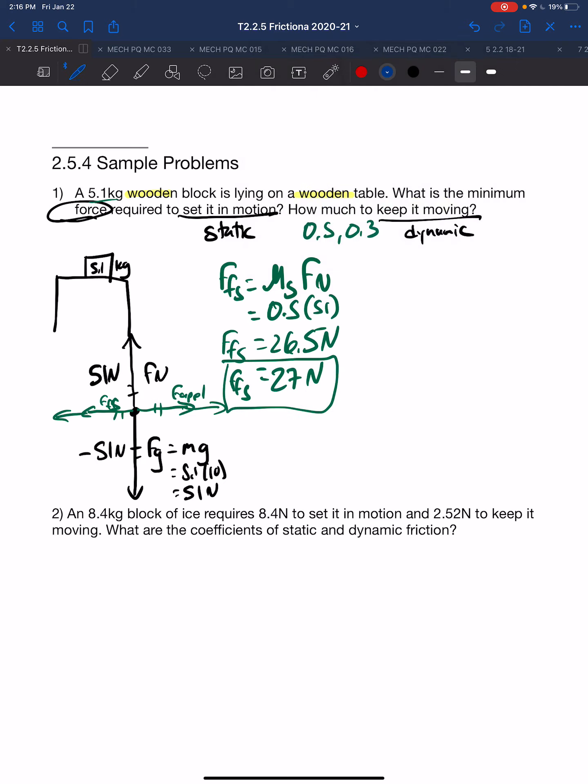Moving to the dynamic part, to keep it moving, the force of friction dynamic is mu d times force normal. That mu d is 0.3, force normal 51, multiplied out is 15.3 newtons, force of friction dynamic. Again, only two significant digits, so we have 15 newtons.